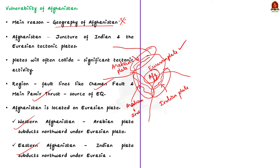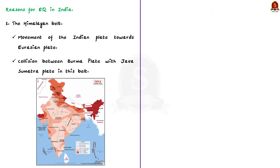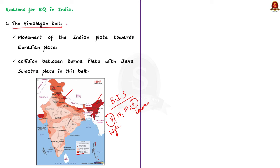According to the Bureau of Indian Standards, India has been grouped into four seismic zones: Zone 5, Zone 4, Zone 3, and Zone 2. Zone 5 is the most dangerous — highly prone to earthquakes — while Zone 2 has the lowest incidence. The main reason for earthquakes in the Himalayan belt is the movement of the Indian plate towards the Eurasian plate, and also the collision between the Burma plate and the Java-Sumatra plate. These collisions create long strain in underlying rocks, and energy gets released in the form of earthquakes.